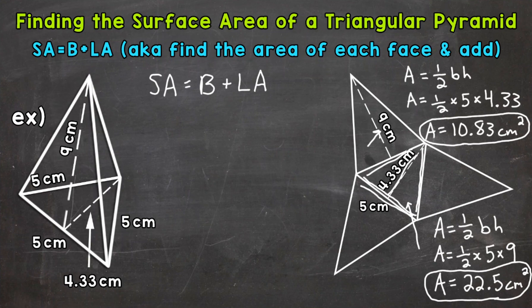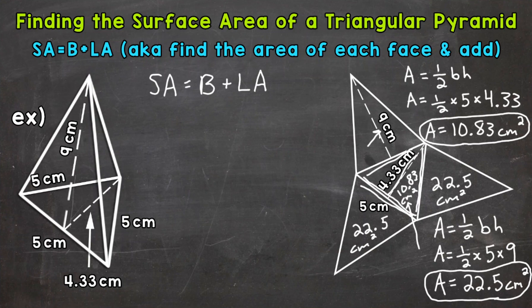To recap: the area of the base is 10.83 square centimeters, and the area of each lateral face is 22.5 square centimeters. I'll fill that in for each face. So we have the area of each of our faces, and now it's time to add all of those up to get the total surface area.